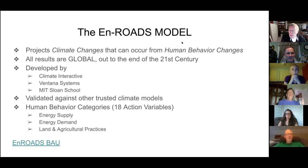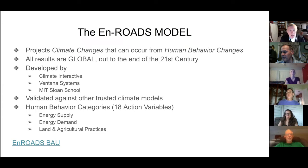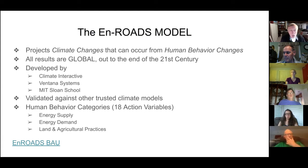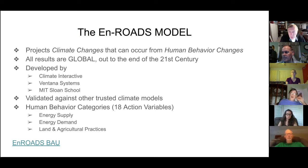Let's talk about the En-ROADS model. Fundamentally, what it does is project changes to the climate out over time based on human behavior changes — things we can activate either through our individual behaviors, through policy, or different variables incorporated into the model. It's important to point out from the get-go that this is a global model, which sounds pretty audacious, but it has been validated against a number of other climate models.